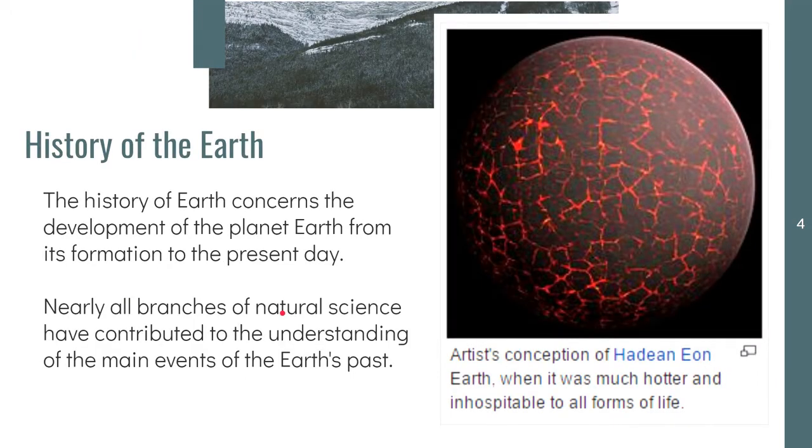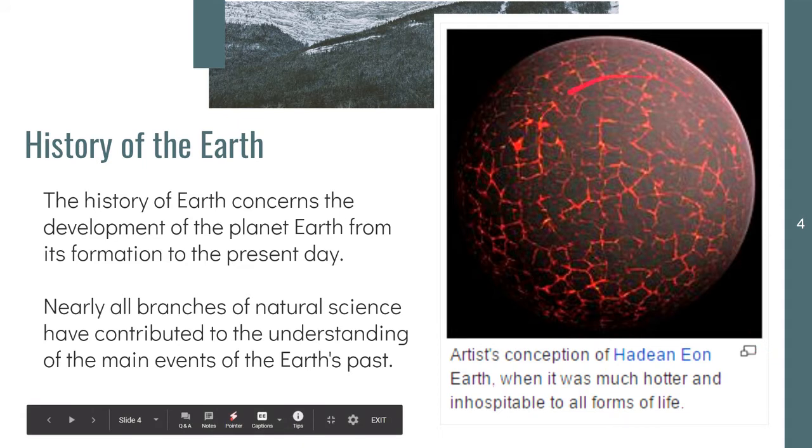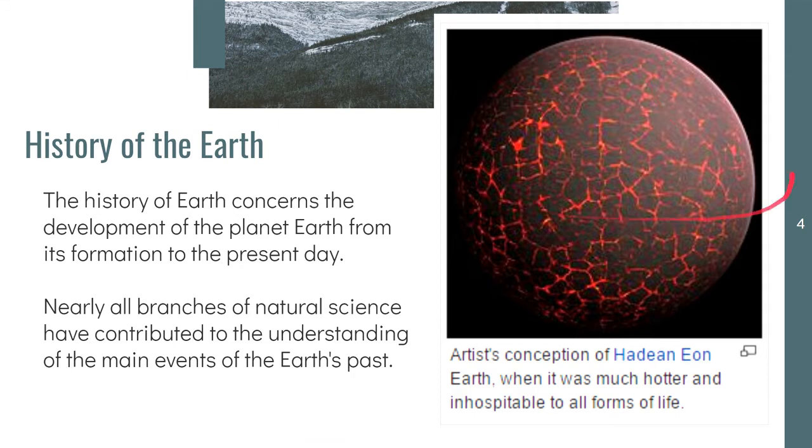The History of the Earth is very much concerned with the development of the planet from its formation up to its present day condition. Here's an artist's conception of how the Earth probably looked during the Hadean Eon. Our Earth started out to be a very hot ball of molten lava.